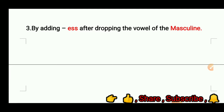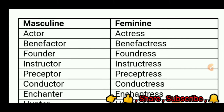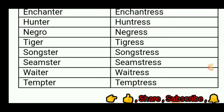Third, by adding -ess after dropping the vowel of the masculine ending. For example: actor — actress; benefactor — benefactress; founder — foundress; instructor — instructress; preceptor — preceptress; conductor — conductress; enchanter — enchantress; hunter — huntress; negro — negress; tiger — tigress; songster — songstress; waiter — waitress; tempter — temptress.